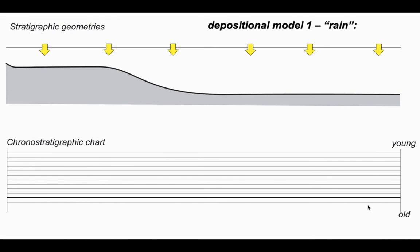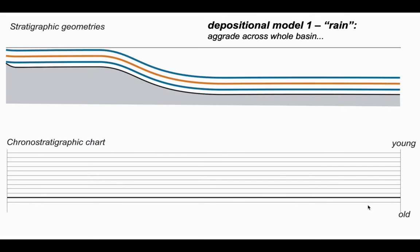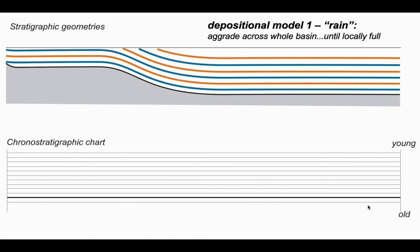Our first depositional model is where sediment rains or snows down from the sea surface to the seabed, blanketing the bathymetry. As we rain more sediment down, the sediment on the seabed simply aggrades upward, building thicker sequences. On the left hand side of our diagram there's no more space to accumulate sediment, but there is on the right, so sediment becomes progressively restricted to the right hand side as we fill our basin up.